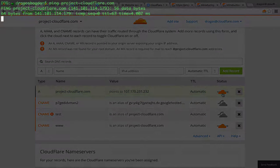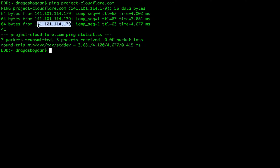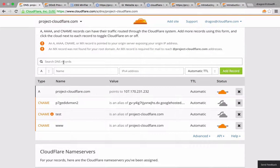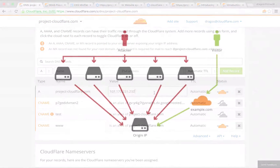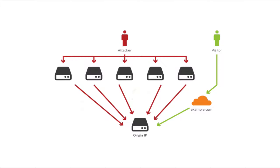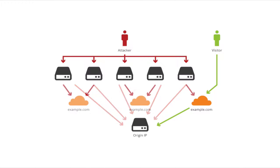The orange cloud also hides your website's direct IP address by resolving to a Cloudflare address. Exposing the IP address of your server gives malicious parties a direct route to your server, enabling them to overwhelm it with requests from compromised machines all around the world. When the orange cloud is enabled, the domain will resolve to a Cloudflare IP address, ensuring any malicious activities against your domain are routed to Cloudflare for protection.